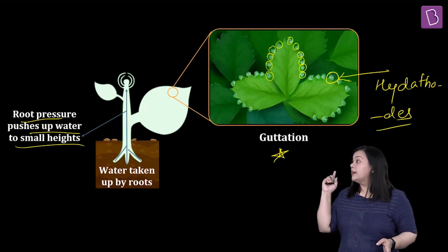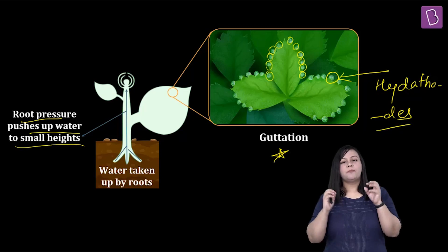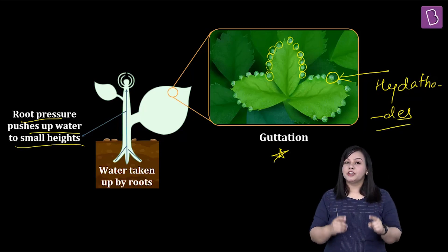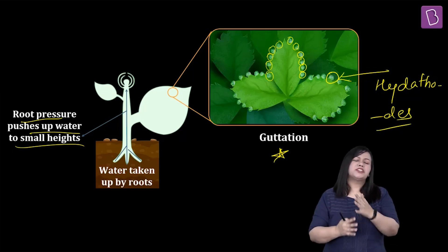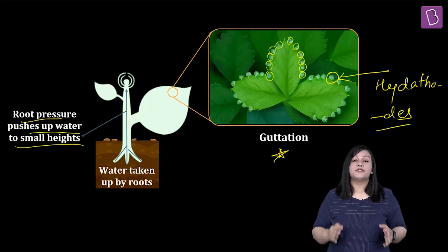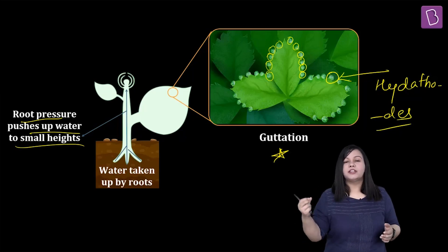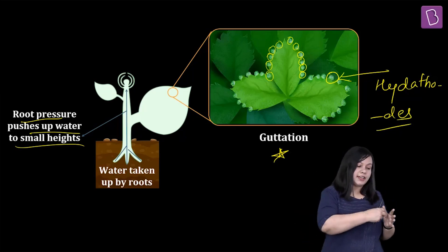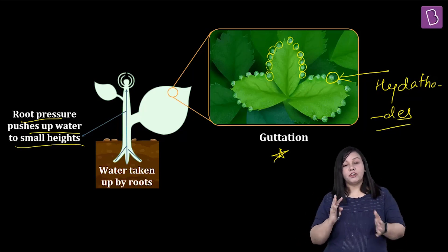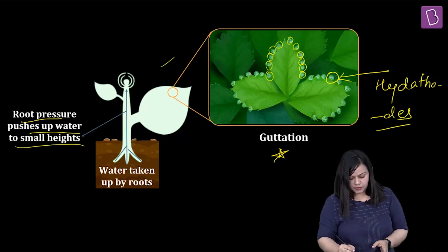Aur yahan par ek point is very worthwhile noticing — yeh jo paani hota hai, it is not just pure water. It is going to be highly rich in solutes, specially sugars. Organic solutes ho sakte hain, inorganic solutes ho sakte hain, lekin sugar mein kaafi zyada rich hota hai. Kyunki yahan pe sirf water vapor ke form mein nahi lose ho raha hai — liquid ke form mein hai, aur woh water hai jo directly xylem elements se aa raha hai. Toh obviously dissolved solutes honge. Ye ek point of difference hai jo exam mein aa sakta hai. Answer obviously aapka hoga root pressure.